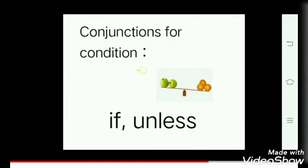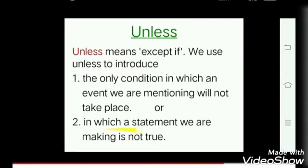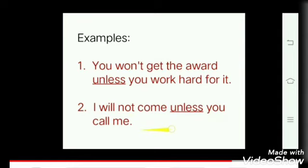Next set of conjunctions is if and unless. Unless means except if. We use unless to introduce the only condition in which an event we are mentioning will not take place or in which a statement we are making is not true. For example, you won't get the reward unless you work hard for it. I will not come unless you call me.